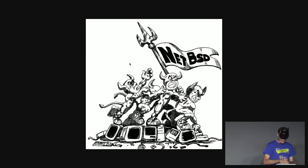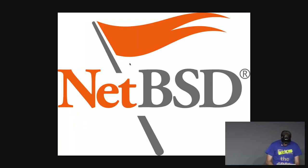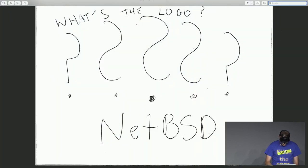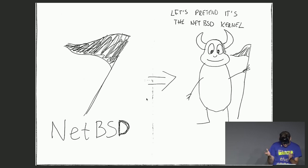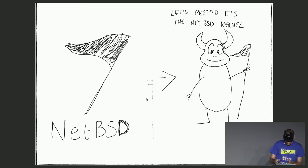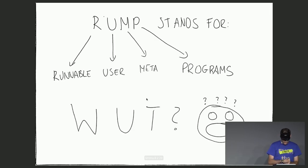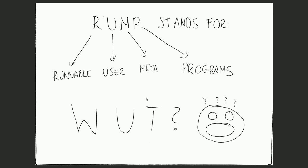The NetBSD logo looked like this a few years ago, but now it looks different. We're going to pretend it looks like the old one because it would be easier for me to explain the RUMP kernel. Let's pretend this is the NetBSD kernel — we can call this daemon maybe Robin. RUMP stands for Runnable User Meta Programs, and I honestly have no idea what it means, so I decided to dig into the documentation.